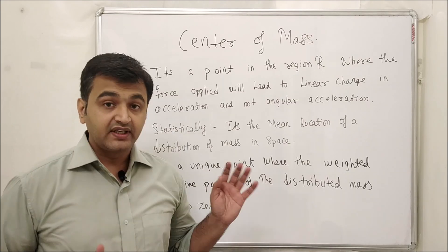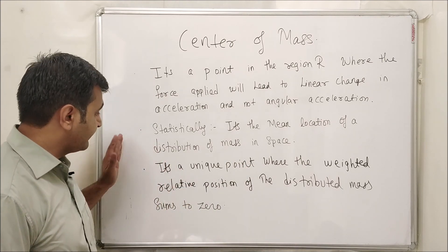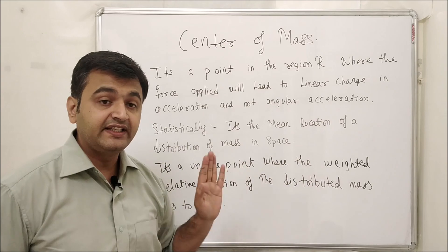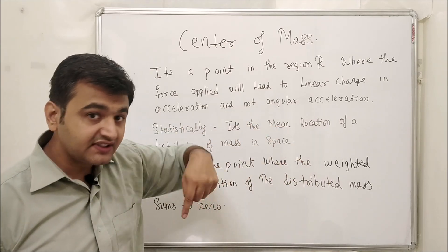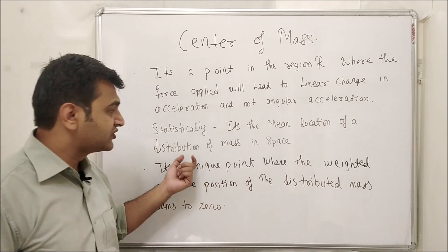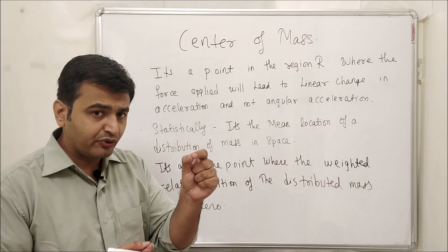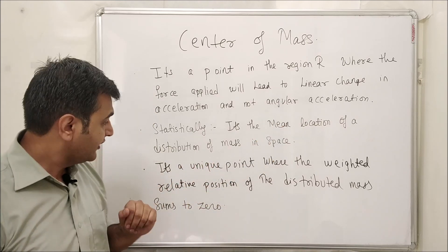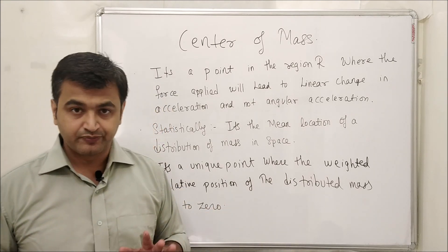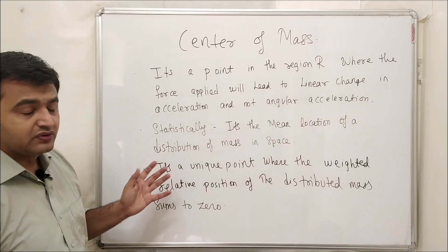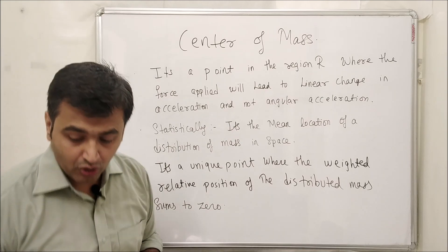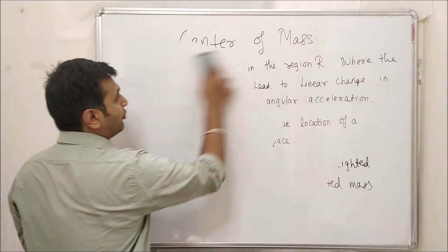Now let's look at first moments and center of mass. The center of mass is a point in the region where, when you apply a force, it leads to linear change in acceleration rather than angular change. Statistically, it is the mean location of the distribution of mass, or equivalently, the unique point where the weighted relative position of the distributed mass sums to zero.